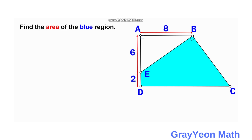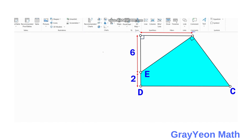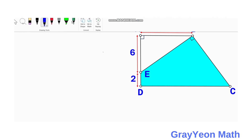Welcome. We are asked to solve this problem: quadrilateral ABCD has a perpendicular pair of segments AB and AD. From point B, a segment is drawn to point E on segment AD, and segment BE is perpendicular to BC. The lengths given are AB = 8 units, AE = 6, and ED = 2. We are required to find the area of the blue region BCDE.